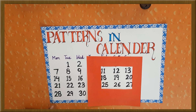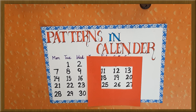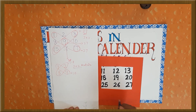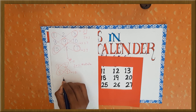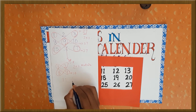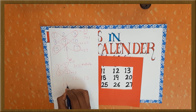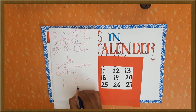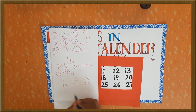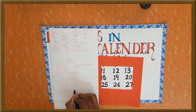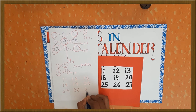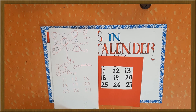Here is your task — you need to solve this magic square. Please pause the video, solve it, and then continue watching. Let's make this puzzle on a sheet of paper: 11, 12, 13, 18, 19, 20, 25, 26, 27. Now we will see the pattern in these numbers.